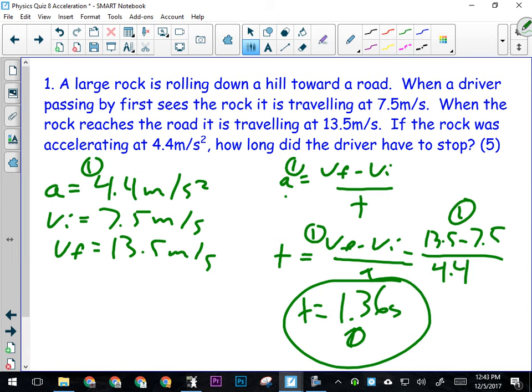Okay, so in question number one, we have a rock that's rolling down the hill toward a road when a driver passes by first sees the rock traveling at seven and a half meters per second. So that's going to be our initial velocity.